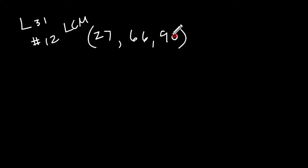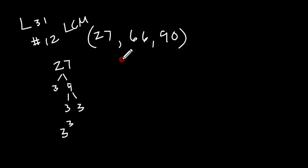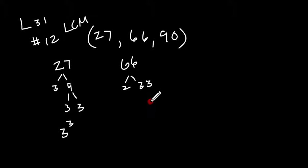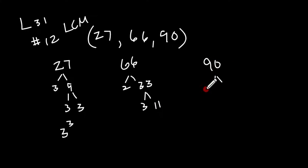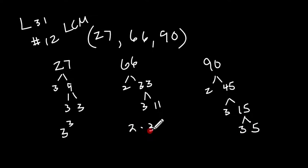You can't just look at those and figure out the LCM, so you need to do the factor trees and prime factor each number. So 27 is 3 times 9, then 3 times 3 — giving us 3 cubed. For 66: 2 times 33, then 3 times 11 — so 2 times 3 times 11. And 90 is 2 times 45, 3 times 15, then 3 times 5 — giving us 2 times 3 squared times 5.